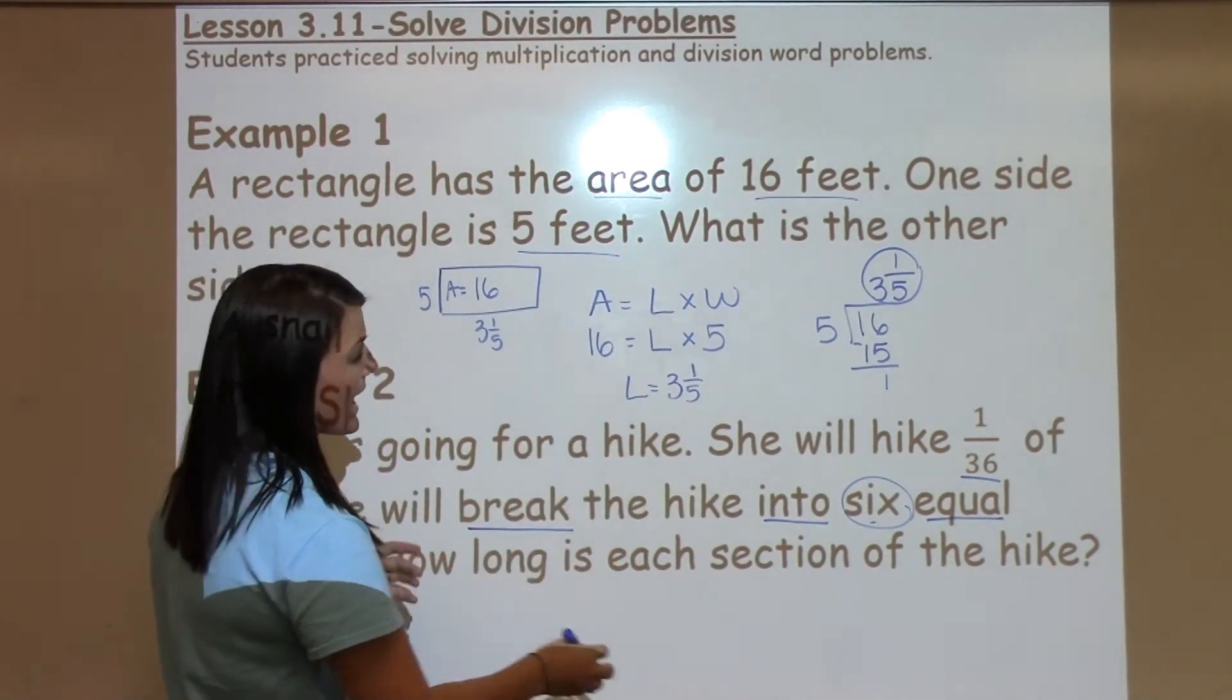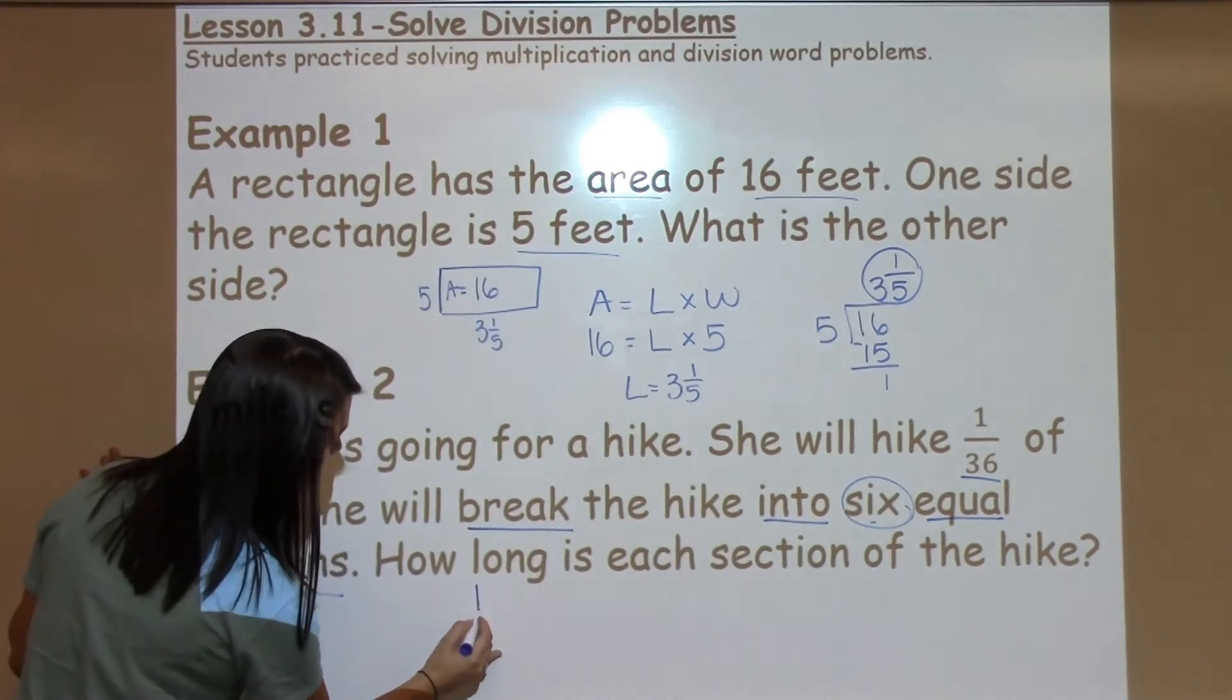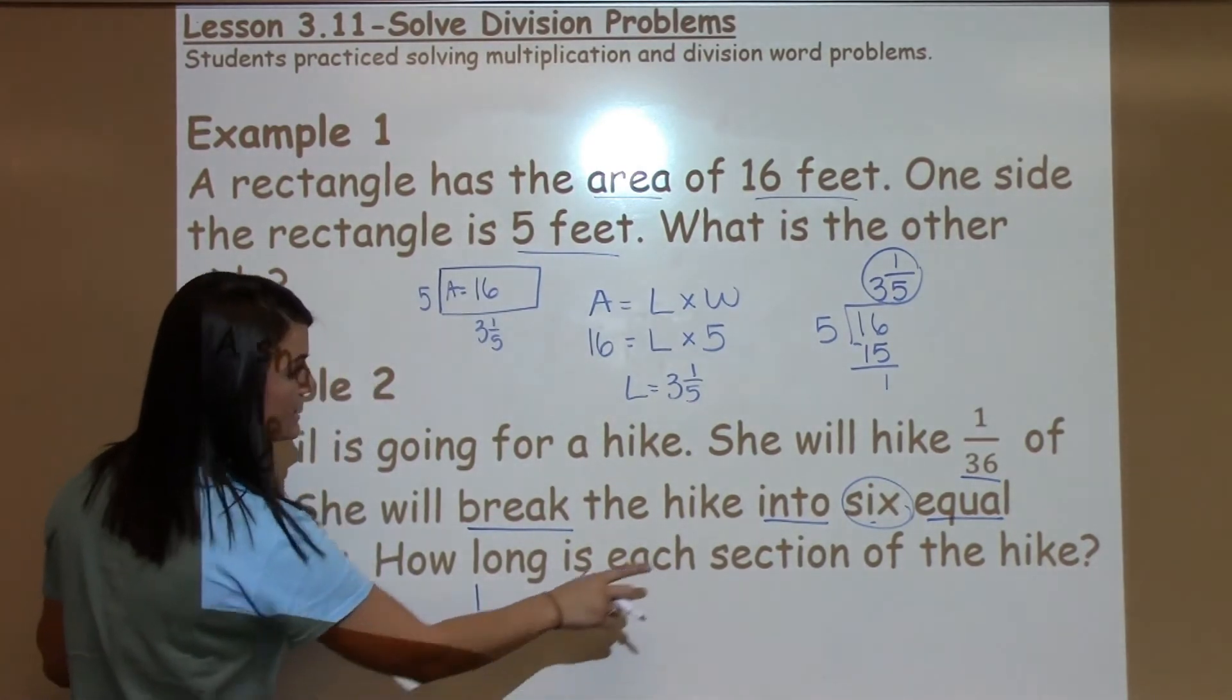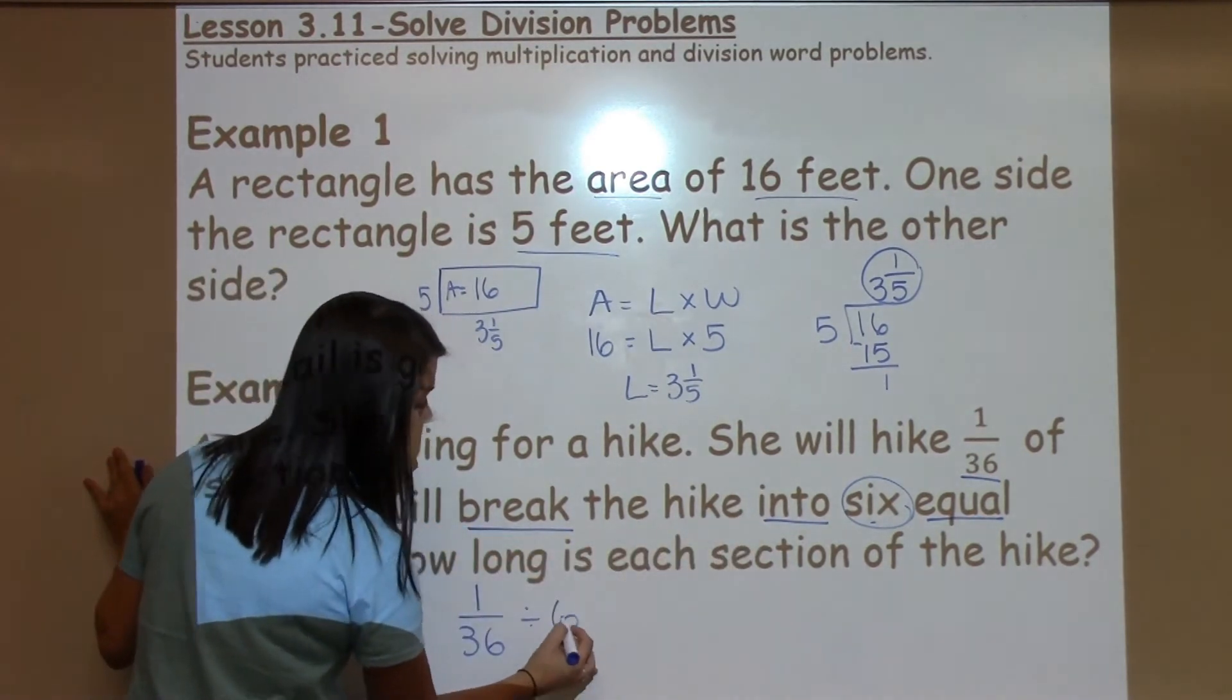So what do I have? I have 1/36th of a hike, and I need to break it into, divide by 6.